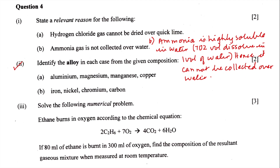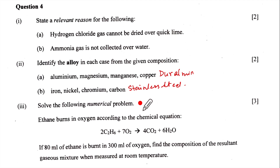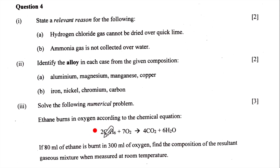Part two: identify the alloy from the given composition. Aluminium, magnesium, manganese, and copper — this is the composition of Duralumin. Iron, nickel, chromium, and carbon — this is stainless steel. Part three — numerical problem: ethene burns in oxygen. 80 mL of ethene burns with 300 mL of oxygen. We write the reaction and note 80 mL of ethene and 300 mL of oxygen. At room temperature, water will be liquid, so it is not applicable as a gas.